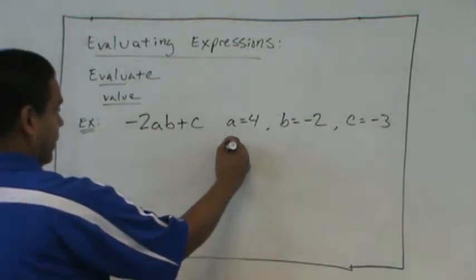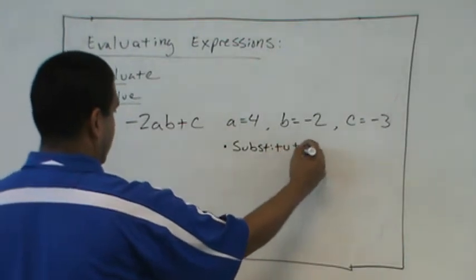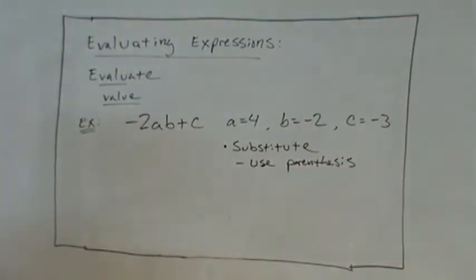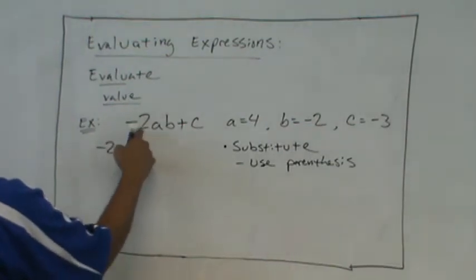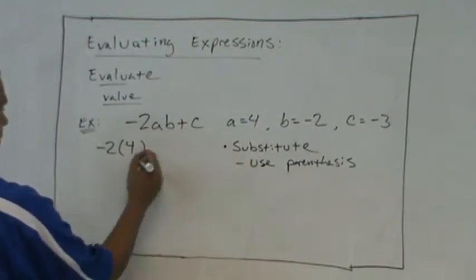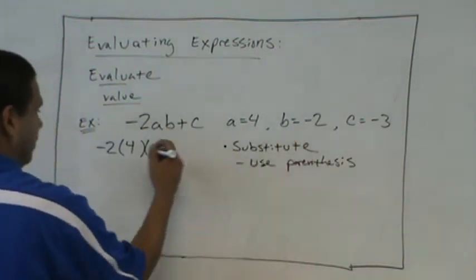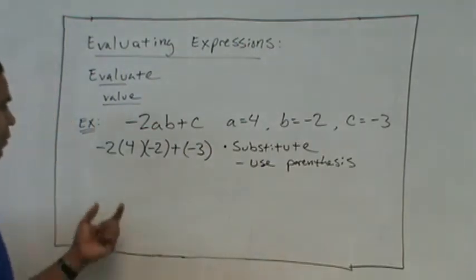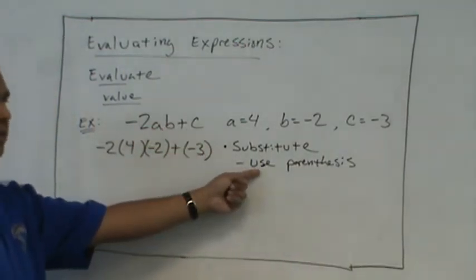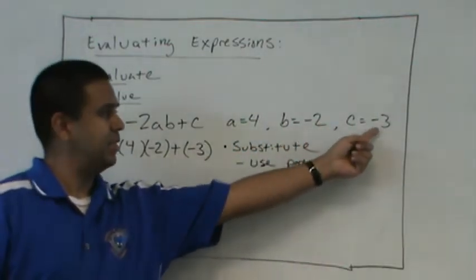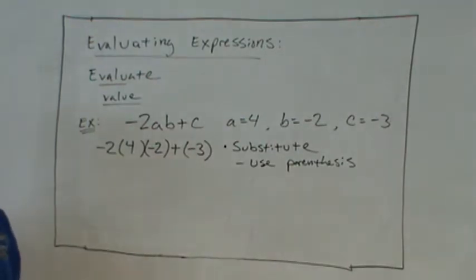So the first thing we're going to do is substitute. And when we substitute, I want you to use parentheses. So we're going to write this again. You have negative 2. There's an a, so we're going to put parentheses to substitute a, which is 4. And again, we're going to use parentheses to substitute the value for b, which is negative 2. And then we're going to plug in c, which is negative 3. So we substituted a, b, and c, and we use parentheses. The reason we use parentheses is so that we don't lose these negatives. And we keep track of those negatives. And it will help us when we do the next step.